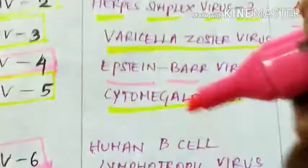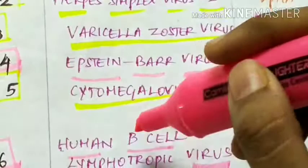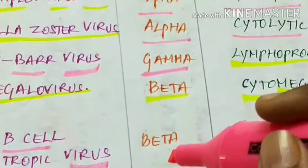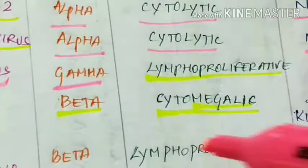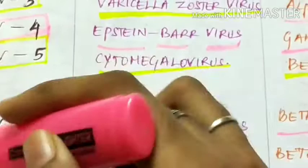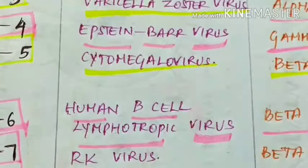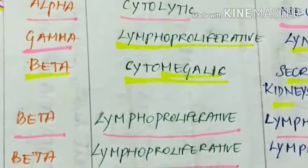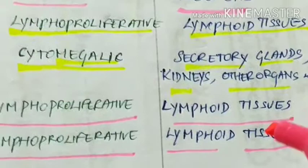Human herpes virus 6 is called human B cell lymphotropic virus. It belongs to subfamily beta, is lymphoproliferative, and the site of latent infection is lymphoid tissues. Human herpes virus 7, also called RK virus, also belongs to subfamily beta, is lymphoproliferative, and establishes latent infection in lymphoid tissues.